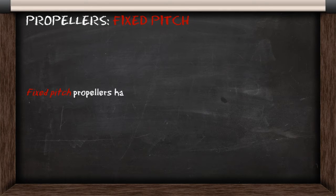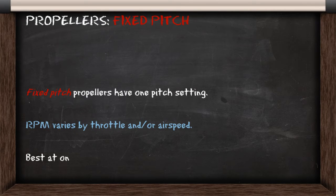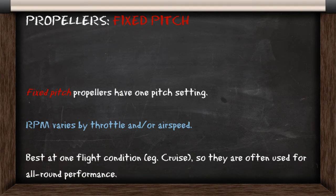A fixed pitch prop has one pitch setting, so the RPM is going to vary depending on your throttle and airspeed. This means that fixed pitch props are best at one flight condition, so they're often used to give all-round performance.